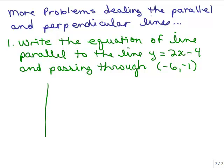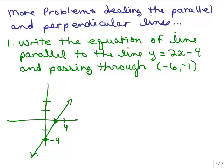Let's get a little picture of what's going on here. For 2x minus 4, the y-intercept is at 0, negative 4, and the slope is 2, so going over 1 and up 2. That's the original line. I'm trying to find the equation of the line that's parallel to this and going through the point negative 6, negative 1, which is maybe right about here. So it's good to have a picture in your mind of what you're trying to do.